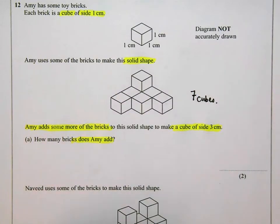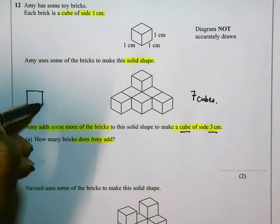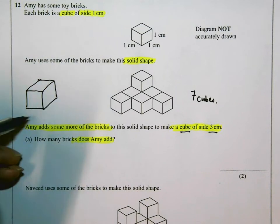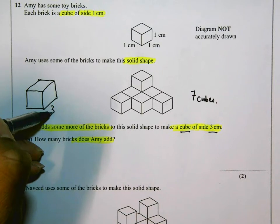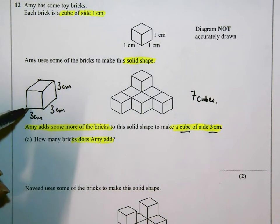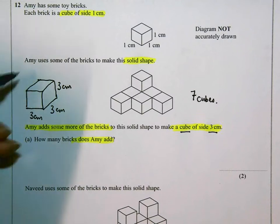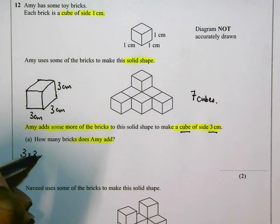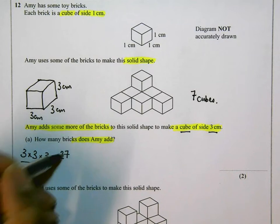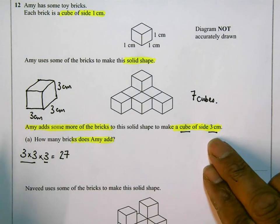Now if she wanted to make a cube of side three centimeters, this is what a cube would eventually look like. It would be a big cube with each side being three centimeters. That would be three, three, three, and it would also be three centimeters high. So she'd have three of these cubes going across, three going backwards, and three high. That's three times three times three. Three times three times three is nine. Nine times three is 27.